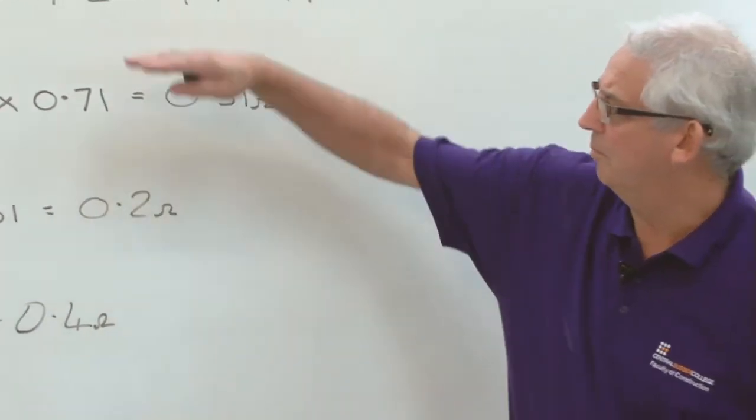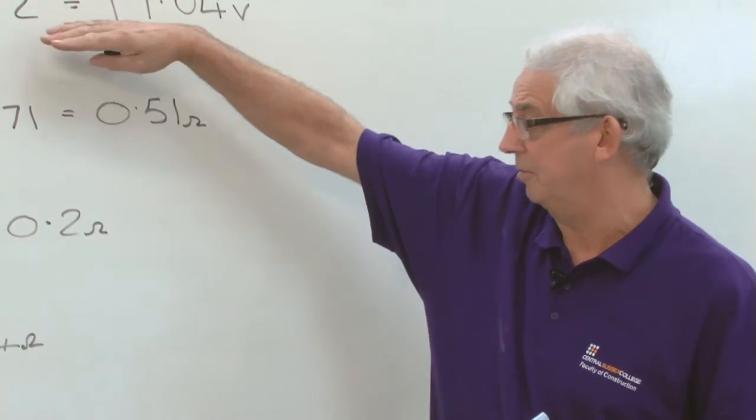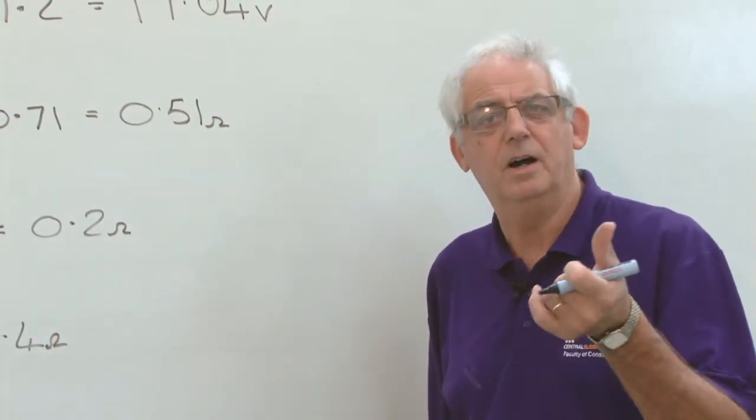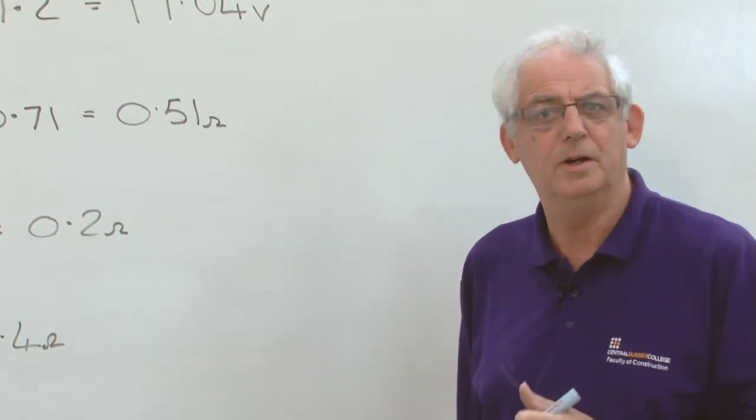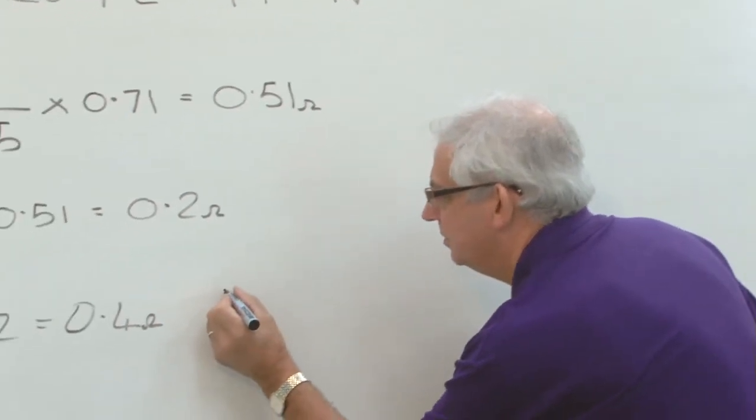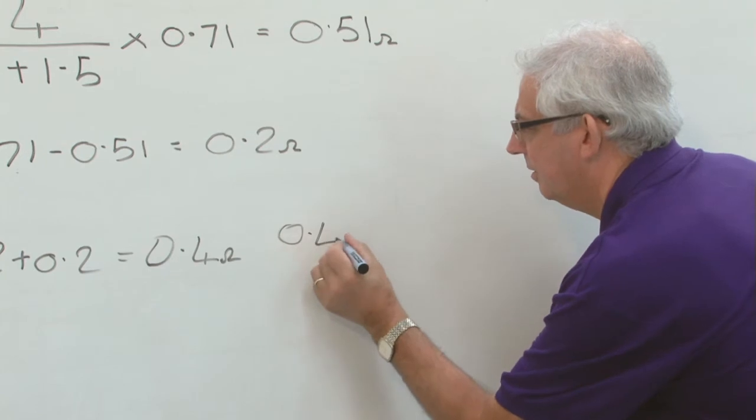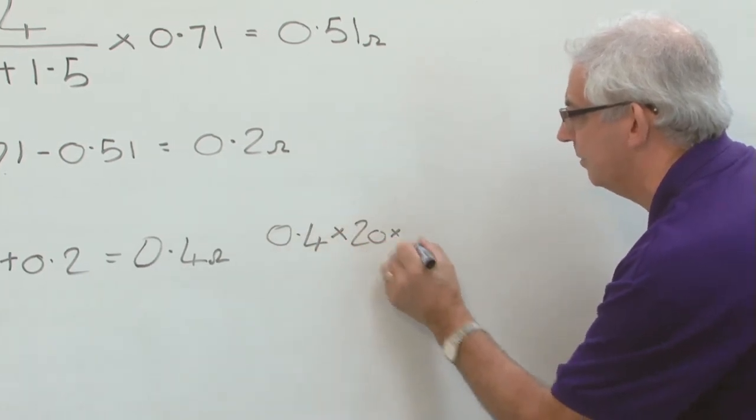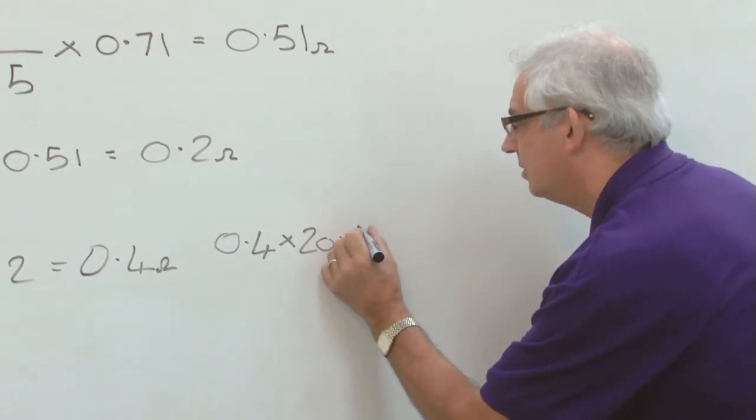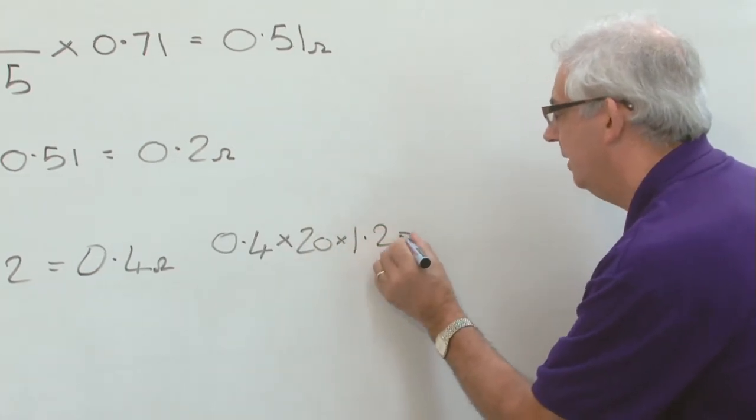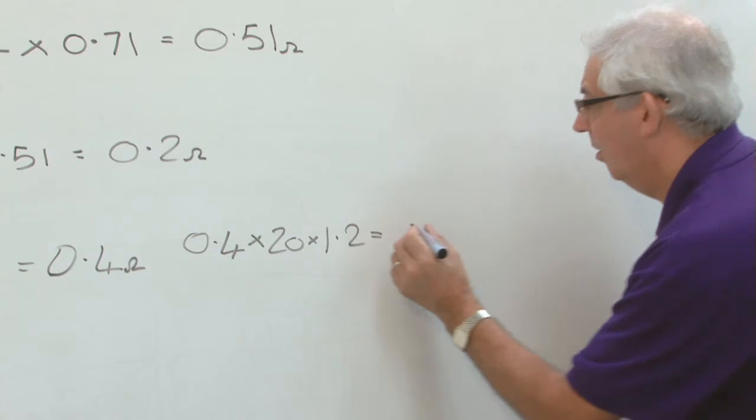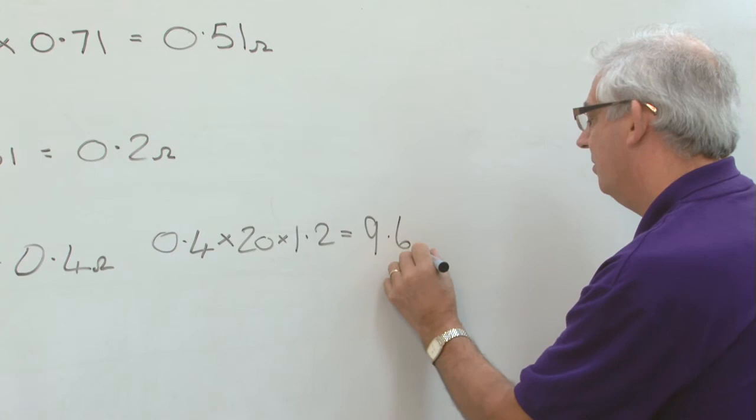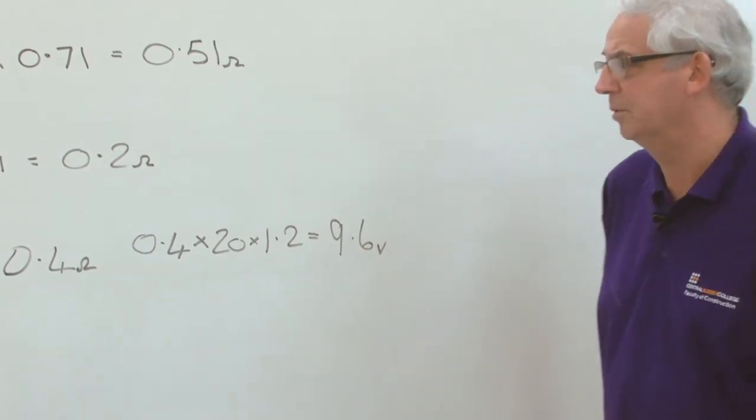Now I can revert back to my old calculation, on my first calculation using 0.4 because I've now got Rn plus R1. 0.4 times 20, the rating of the protective device, times 1.2 gives me a value of 9.6 volts, which is perfectly acceptable.